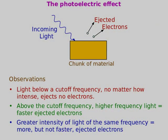Light is electromagnetic waves — however, some phenomena of light cannot be explained by classical wave theory. One of them is the photoelectric effect. The basic idea: shine light on a metal. The Poynting vector tells us light delivers energy to the metal. What can happen? The energy can kick electrons out of the material, ionizing atoms and giving kinetic energy to electrons.